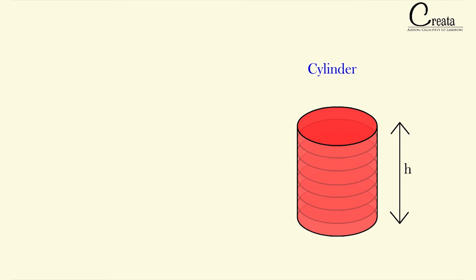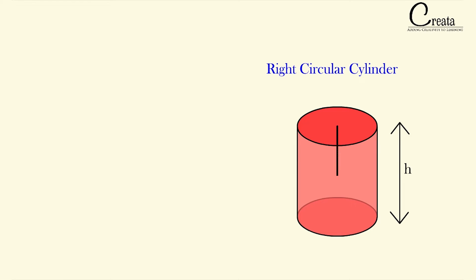This cylinder is known as a right circular cylinder. Why? Because we have placed all these circles one over another. If we join the centre of the top circle with the bottom circle, we get a straight line, and this straight line is perpendicular to the bottommost circle — it makes a right angle. So this cylinder is known as a right circular cylinder. Wherever we talk about the cylinder in this lecture, we will be talking about the right circular cylinder.